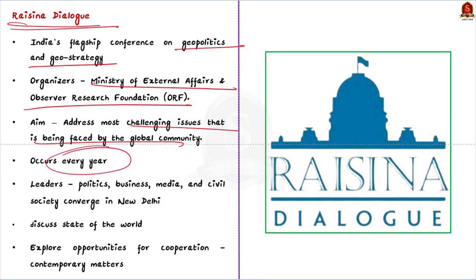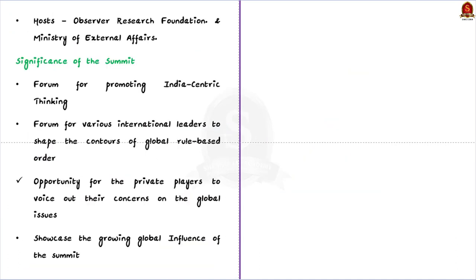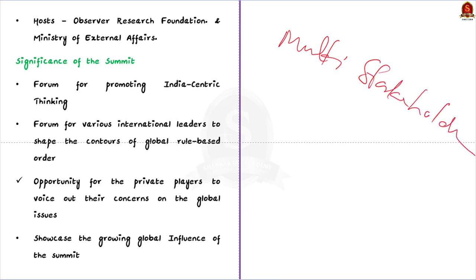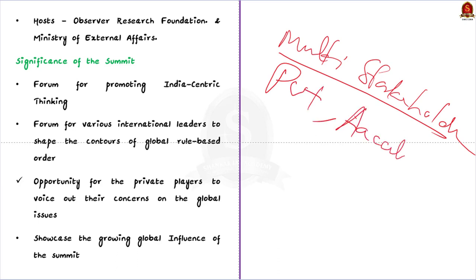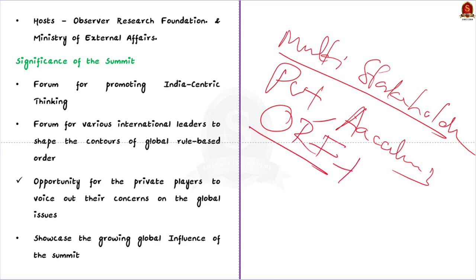When does it occur and who participates? It occurs every year and leaders in politics, business, media, and civil society converge in New Delhi to discuss the state of the world and explore opportunities for cooperation on a wide range of contemporary matters. The dialogue is structured as a multi-stakeholder, cross-sectoral discussion involving heads of state, cabinet ministers, local officials, and leaders from the private sector, media, and academia. The conference is hosted by the Observer Research Foundation in partnership with the Ministry of External Affairs.